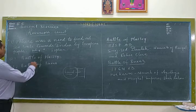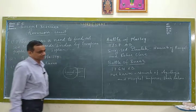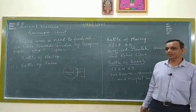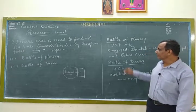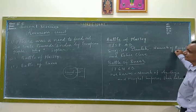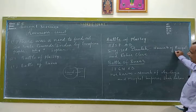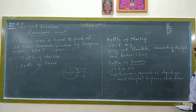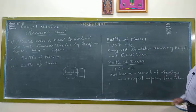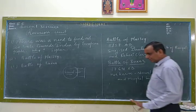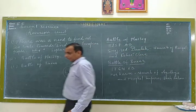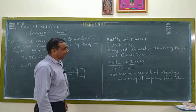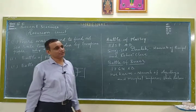Question number 2: Battle of Plassey. The Battle of Plassey was fought between the Nawab of Bengal, Siraj ud-Daulah, and Robert Clive in 1757.